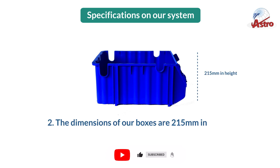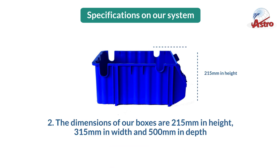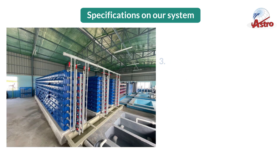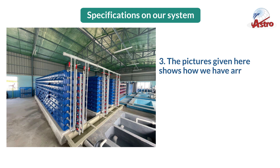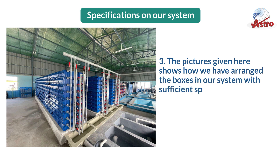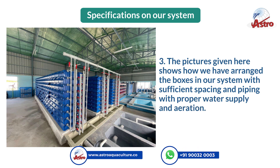The dimensions of our boxes are 215 millimeters in height, 315 millimeters in width, and 500 millimeters in depth. The pictures given here show how we have arranged the boxes in our system with sufficient spacing and piping, with proper water supply and aeration.